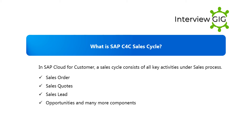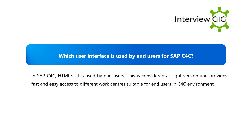What is the SAP C4C sales cycle? In SAP Cloud for Customer, a sales cycle consists of all key activities under the sales process, including sales order, sales quote, sales lead, opportunities, and many more components.